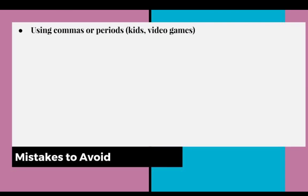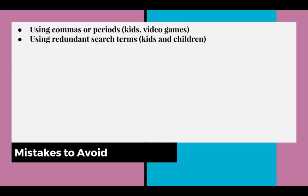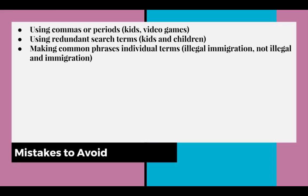A few mistakes you'll want to avoid include: using commas or periods, for example kids, video games; using redundant search terms, for example kids AND children; and making common phrases into individual terms, for example when speaking about illegal immigration, using illegal AND immigration separately.